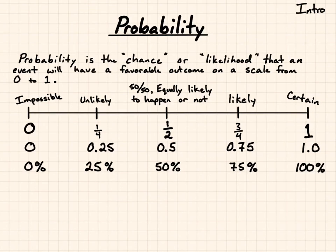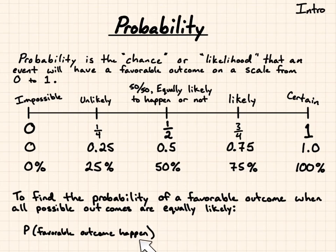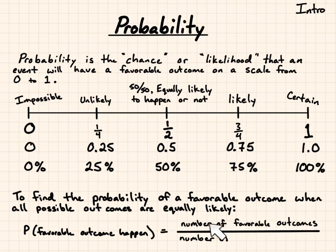We're going to write this out to find the probability of a favorable outcome when all possible outcomes are equally likely. We can say that it looks like this notation. Probability of favorable outcome to happen, or probability of our event happening, is going to be the number of favorable outcomes divided by the number of possible outcomes. And it will be represented as a fraction at first. Let's see what that looks like and try some examples.